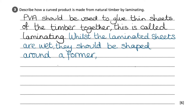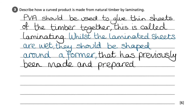Once we have applied PVA to laminate the timber sheets together, we should immediately shape them around a former whilst the PVA is still wet. A former is a 3D object that the laminated timber is moulded around to create the desired curve. It is important to use the word 'former' rather than more informal alternatives such as '3D object' or 'shape'. It is also important to acknowledge that the former will need to be made and prepared before you wet your natural timber with PVA.